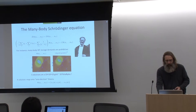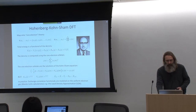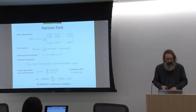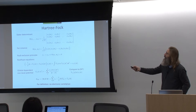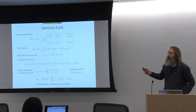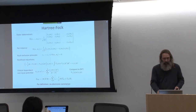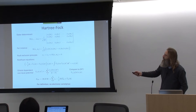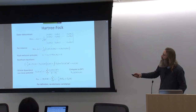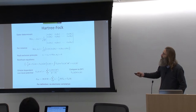Another one-electron theory would be Hartree-Fock theory. So, we can write our many-body wave function as a Slater determinant that involves these one-electron functions that we saw yesterday. So, this has a few interesting properties. And one of the properties is that it includes the Pauli exclusion principle in a natural manner.